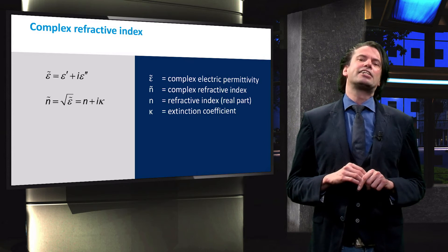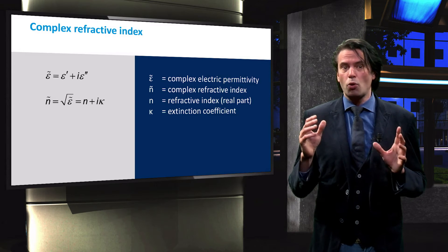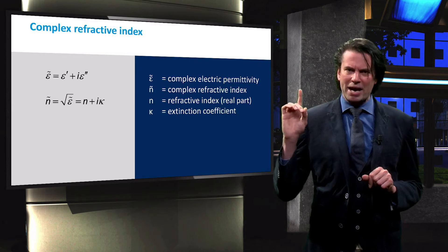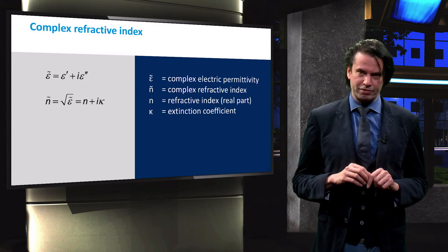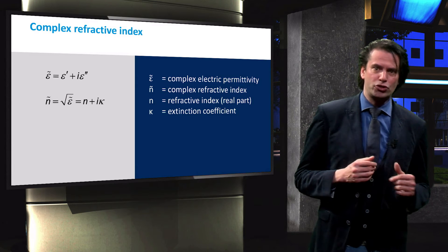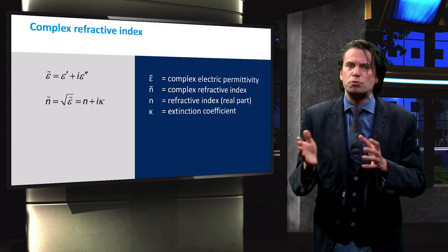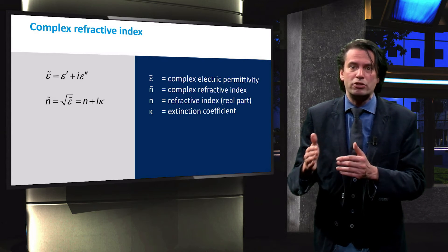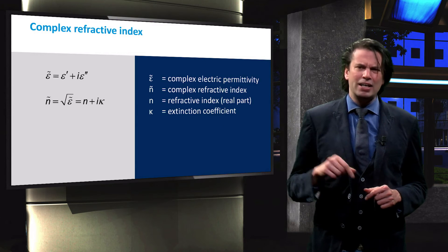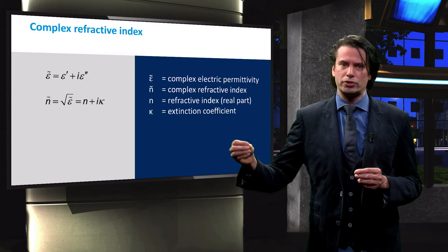The refractive index is given as the square root of epsilon. It is complex too. Here kappa denotes the imaginary part of the refractive index. The real part of the refractive index n is the term that we have been discussing so far, defining the ratio of the speed of light in a medium to the speed of light in a vacuum. The imaginary part, kappa, describes the extinction of light when traveling through a certain medium.